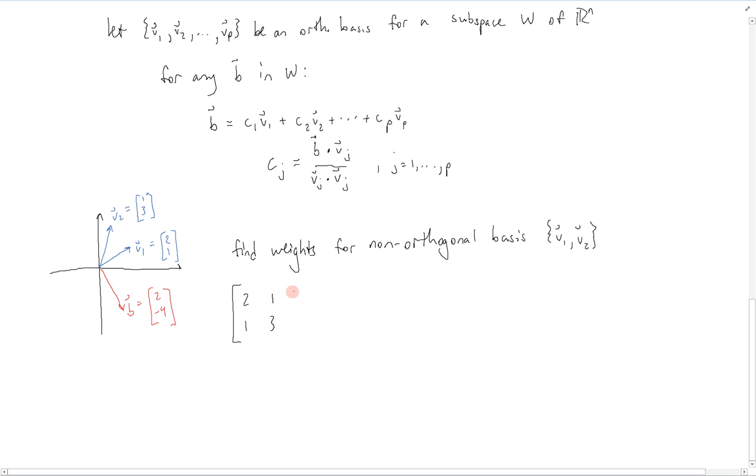So this is the augmented matrix. And this then row reduces to 10, 01, 2, negative 2. So we can see that B is equal to 2V1 minus 2V2.